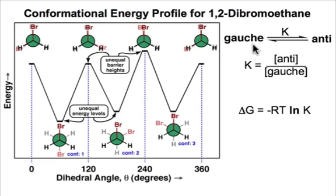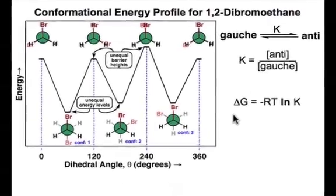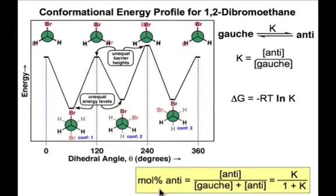And so at equilibrium, K would be a ratio between the anti and gauche forms. It would be convenient for us to define a mole percent based on that equilibrium constant. And you can convince yourself by substituting the values of the ratio here that indeed mole percent is related to K over 1 plus K.